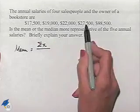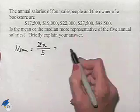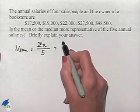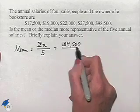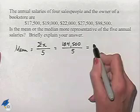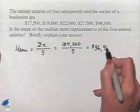If we take our values with the salaries and add them together, we come up with $184,500. We're dividing that by 5 to come up with the mean, which is going to be $36,900.